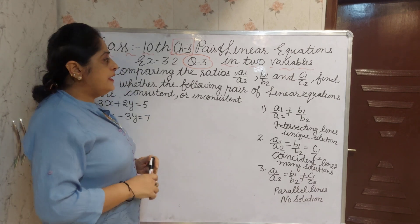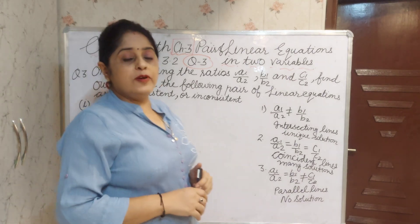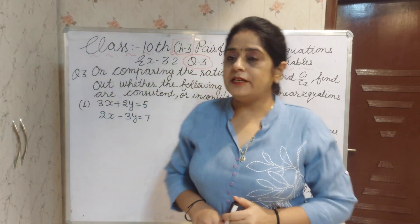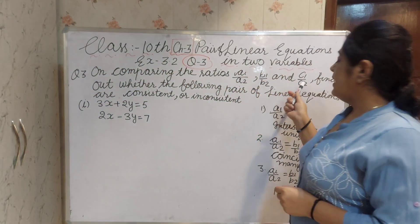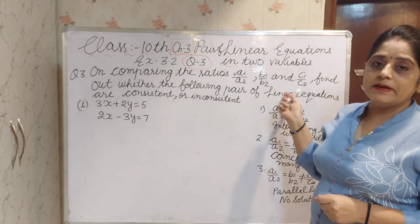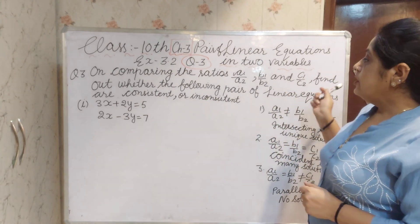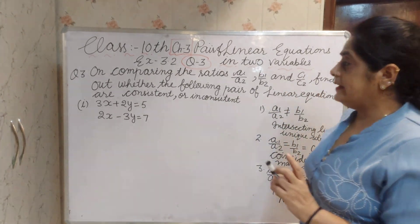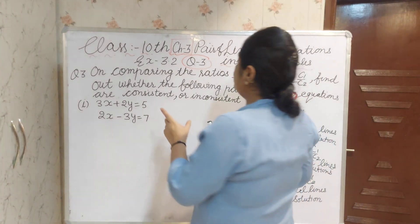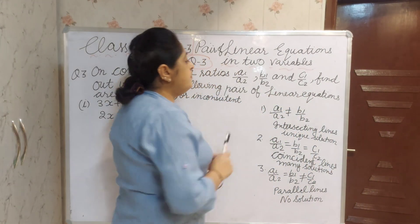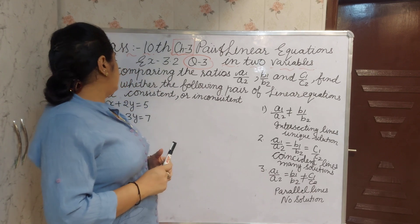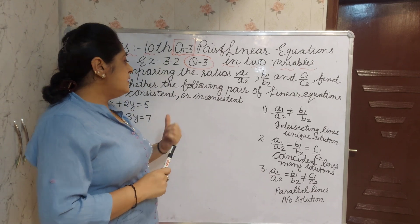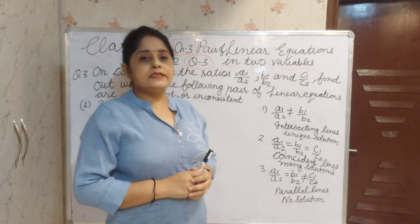On comparing the ratio A1 by A2, B1 by B2, and C1 by C2, you have to find out whether the following pair of linear equations are consistent or inconsistent.